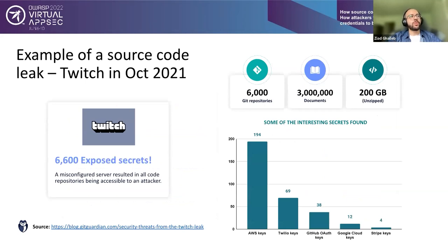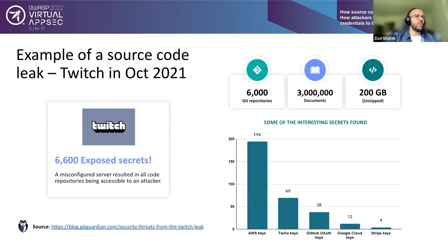Another example is the recent source code leak from Twitch in October 2021. GitGuardian analyzed the leaked git repositories — about 6,000 repositories and 3 million documents — and found more than 6,000 exposed secrets. We don't know if all were valid since we didn't test them, but we found AWS keys, Twilio keys, GitHub OAuth keys, Google Cloud keys, Stripe keys, and many others.